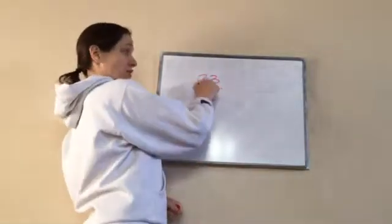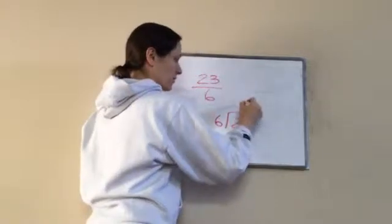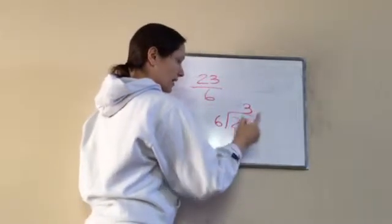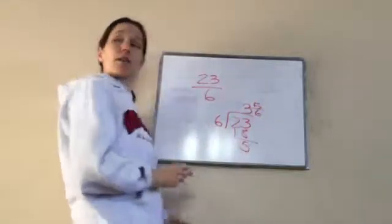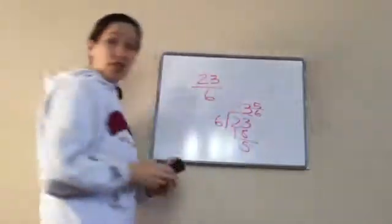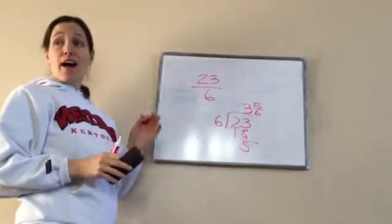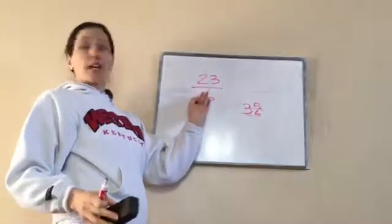You divided. Yep, 23 divided by 6. 23 divided by 6. 6 will go into that 3 times. 19, 22, 23. So 3 and 5/6. Okay, now you're going to learn how to make a mixed number into an improper fraction.